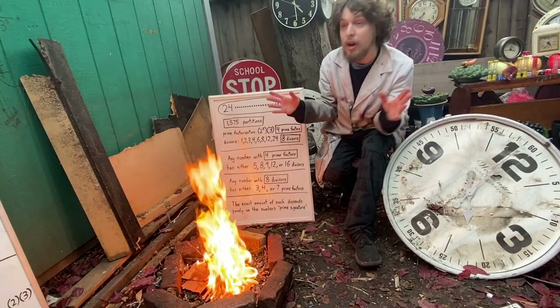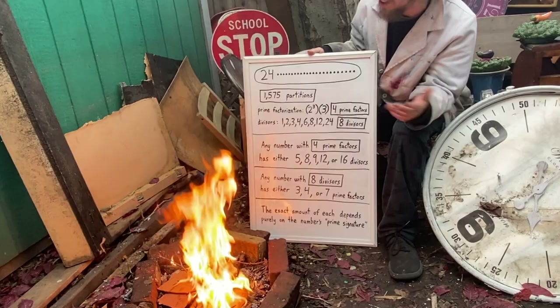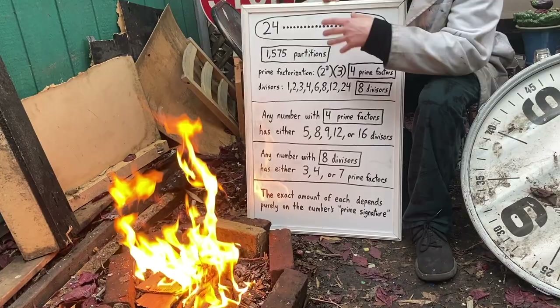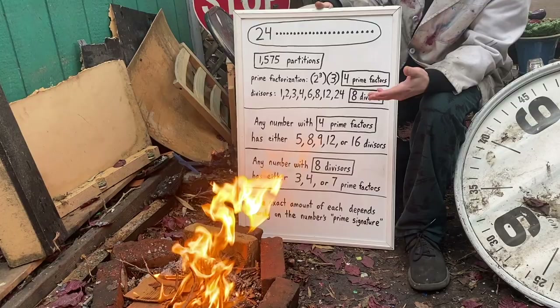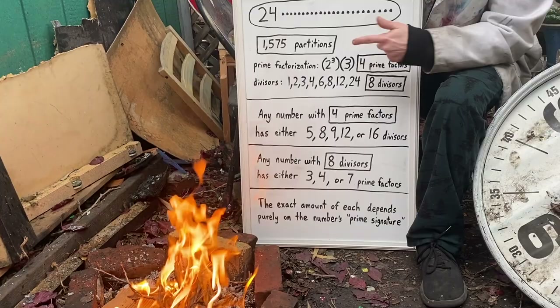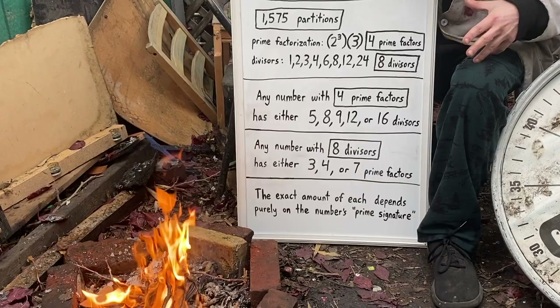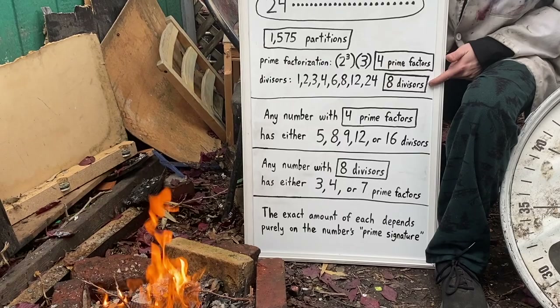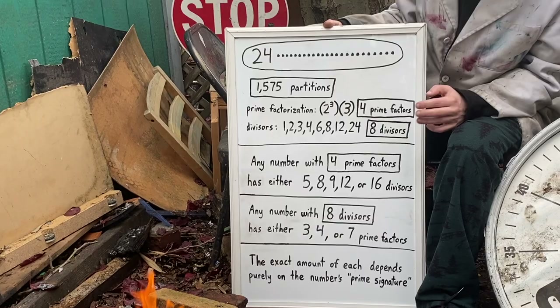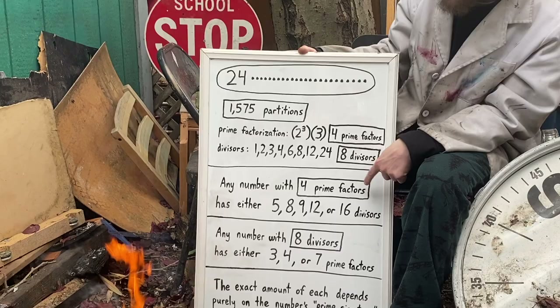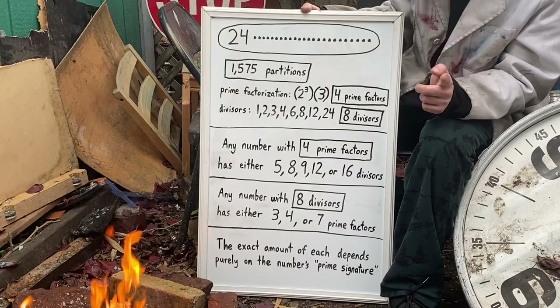With a bigger number like 24, we get a massive number of partitions if we use addition — 24 has more than a thousand ways to do that one plus one plus one et cetera game of making it — but it still has a unique singular prime factorization. In the case of 24, it's two cubed times three to the first power, and it ends up having eight divisors in total. So with 24, we get four prime factors and eight divisors, and that's sort of in the middle of two different potential families. Because if we looked at all the numbers that have four prime factors exactly, not all of them have eight divisors, but all of them have either 5, 8, 9, 12, or 16 divisors.